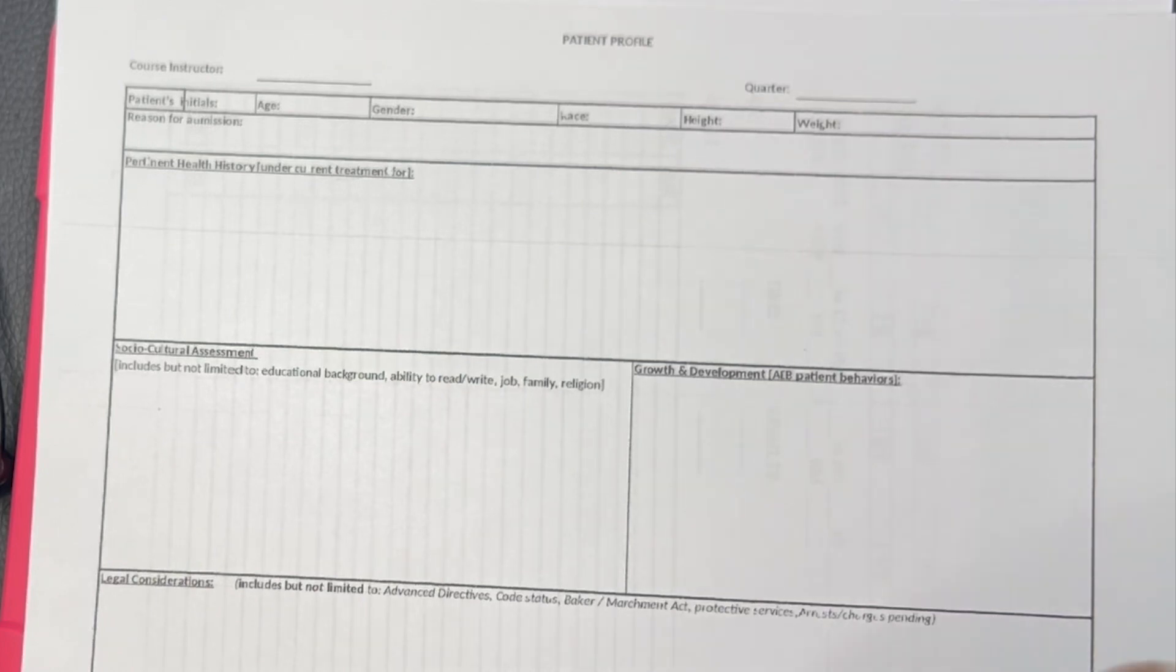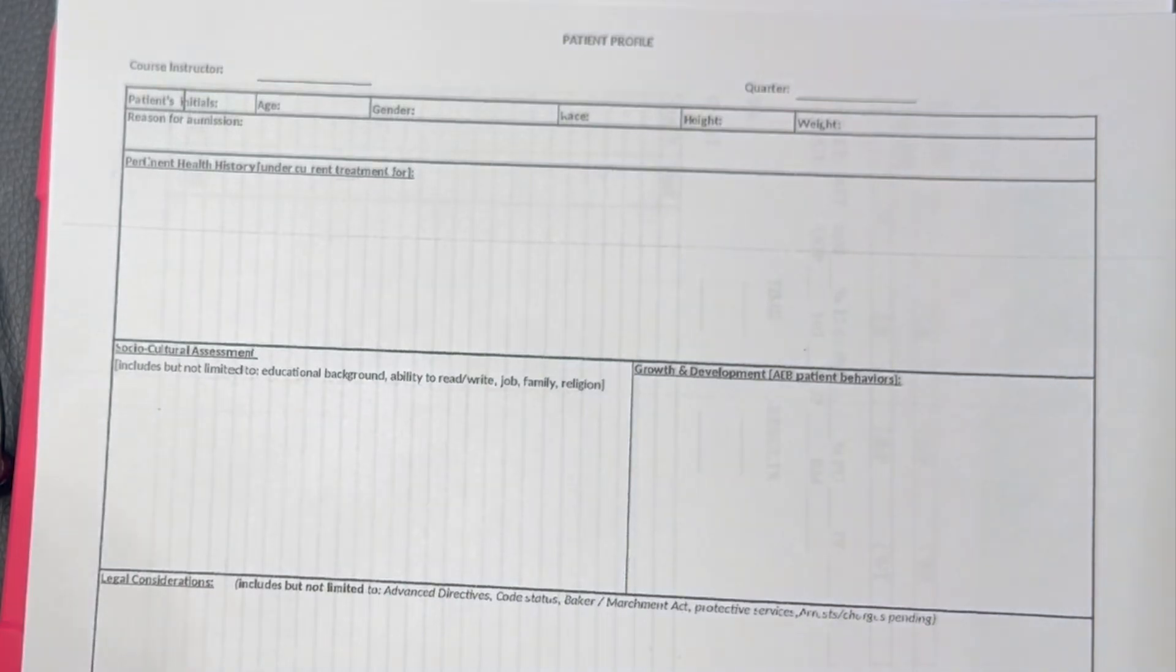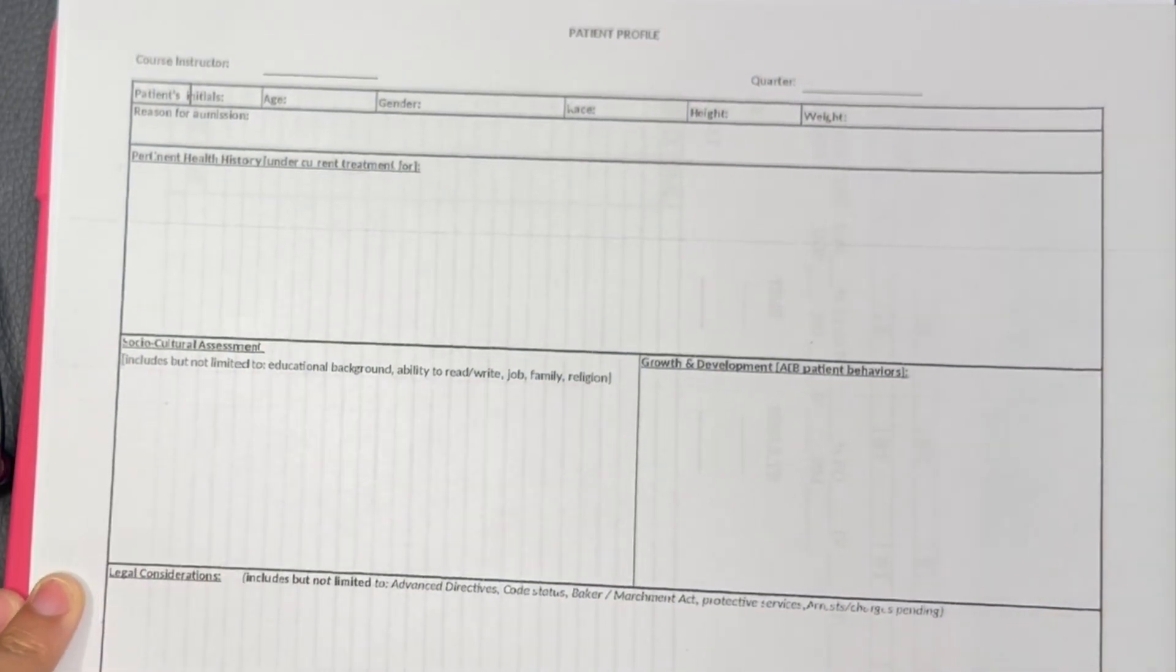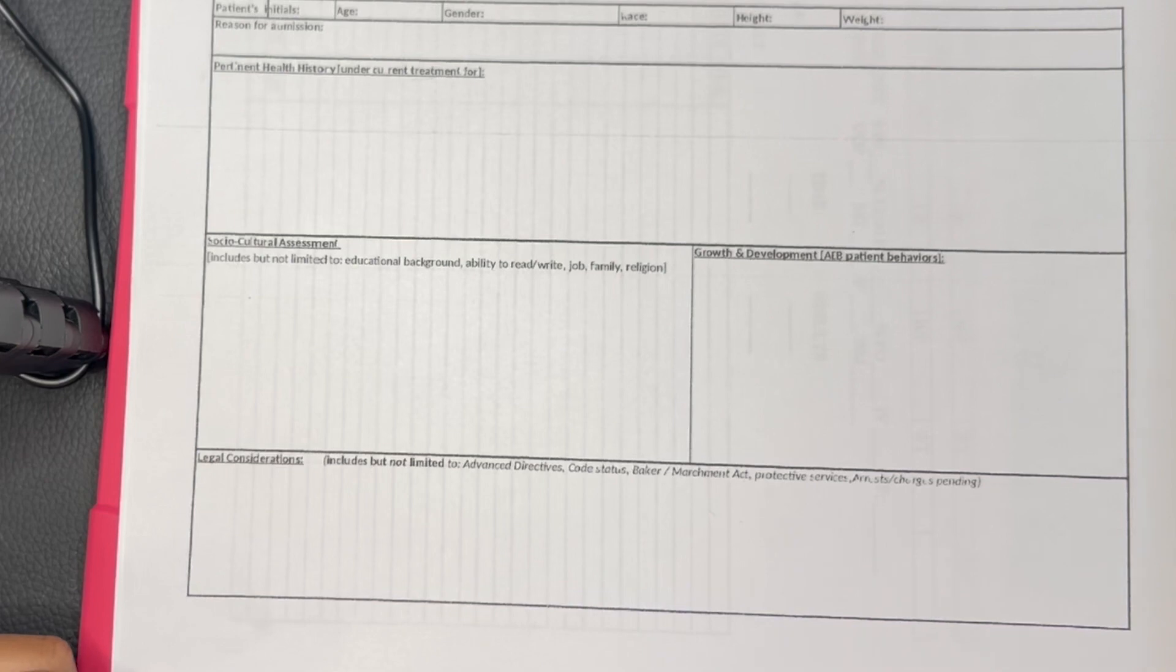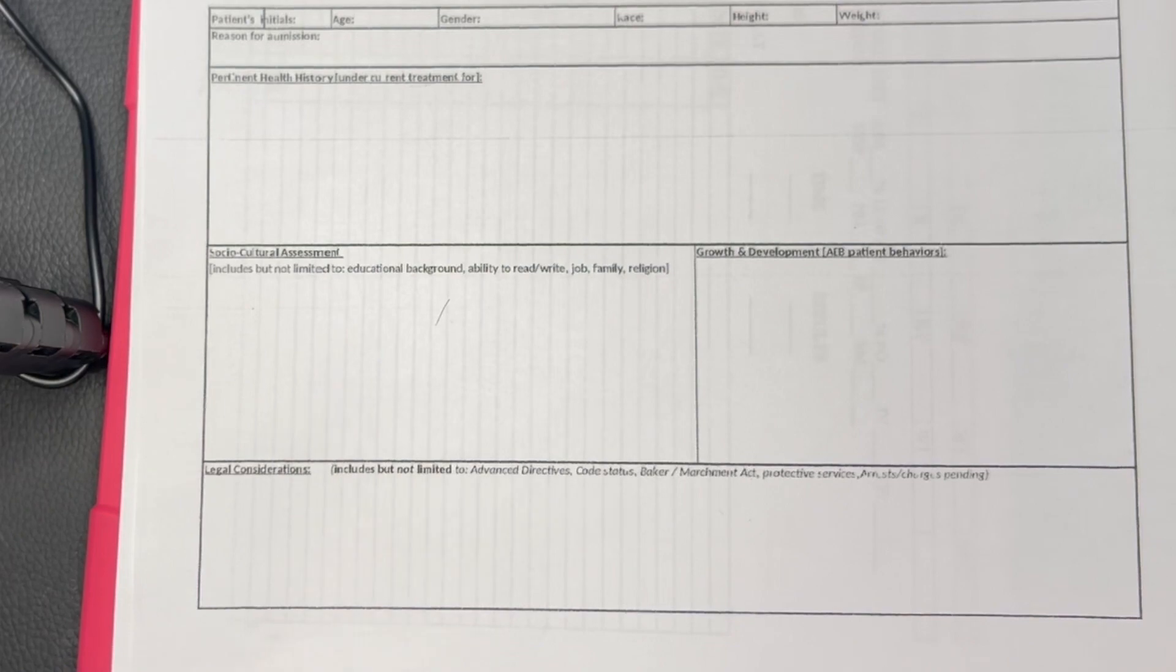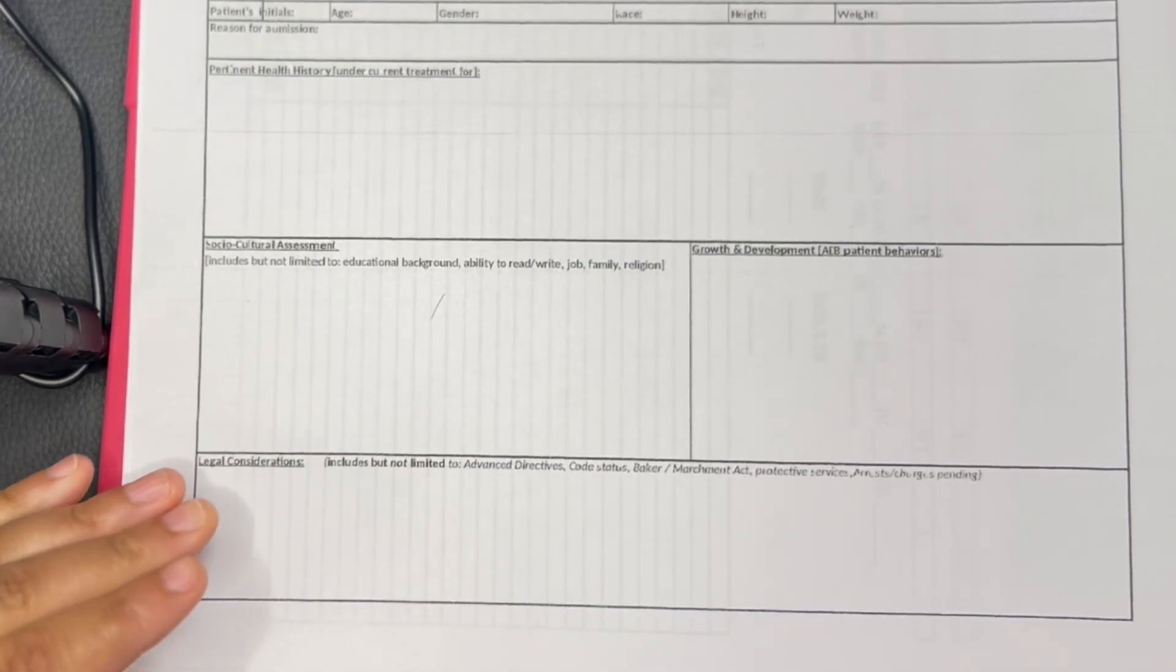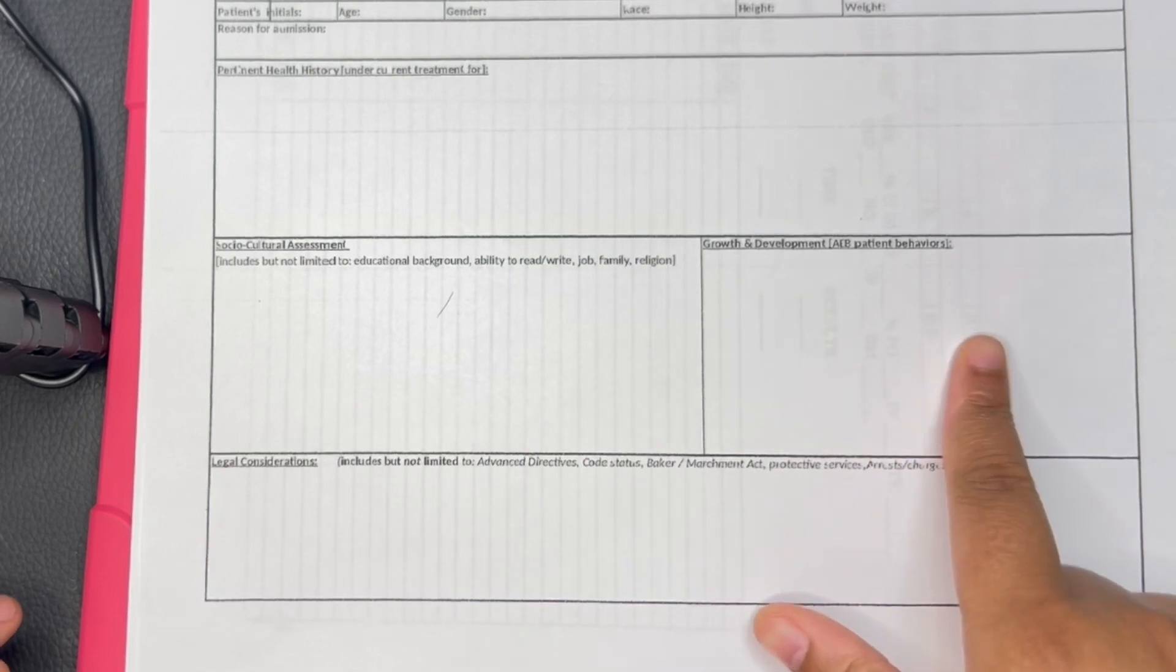Over here, this is the growth and development part. I honestly keep forgetting what type of hierarchy it is, but this pertains to the growth and development. I'm pretty sure everybody has taken growth and development, that's like a prerequisite. Let's say if the patient's like 23 years old, that falls under the early adulthood growth and development, and you would put whatever is associated with early adulthood which will go here.